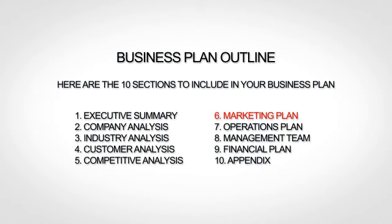The sixth section is your marketing plan, where you lay out your marketing strategy. The seventh section is your operations plan, where you explain how you actually run or will run your business. The next section, the management team, is where you provide bios of your team. The ninth section is your financial plan, where you give financial forecasts. And finally, the tenth and last section is your appendix, where you provide any additional supporting information.